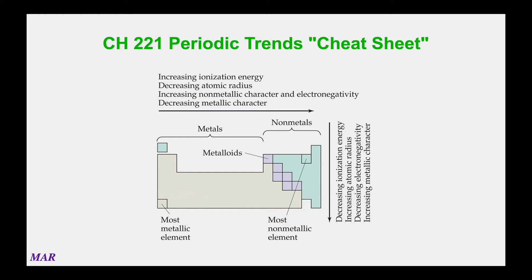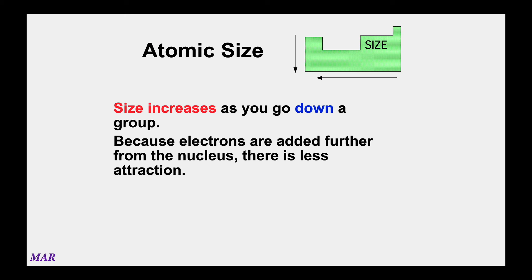There are lots of different periodic trends, but we're going to focus on the sizes of atoms, ionization energy, and electron affinity. Electronegativity is something we'll use a lot starting in Chem 222, so we'll talk about that more later. Also, sometimes it's fun to think about which elements are most metallic or non-metallic, and you can see trends for that as well.